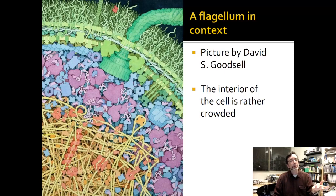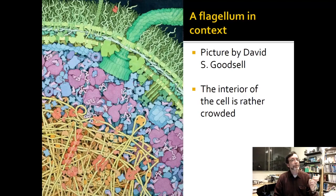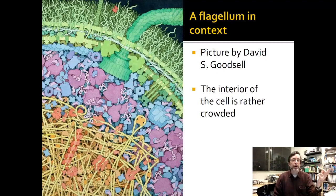Just notice how crowded the cell is. You might be able to recognize some other components that David Goodsell is showing in color — for example, the cell wall is green, and the inside of the cell has all sorts of fibers that are orange and red. It's a cool exercise for review. The one thing you should see is: flagellum — kind of looks like F0, or FO.